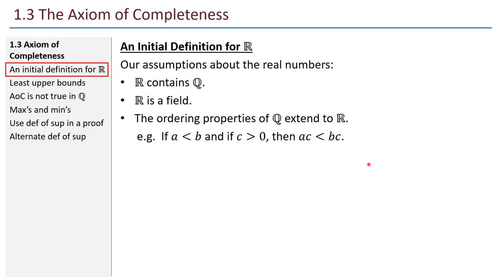An initial definition for the real numbers. What are the real numbers? Here are our assumptions. First of all, the real numbers contains the rationals. Also, the real numbers is a field — that means I can add, subtract, multiply, and divide real numbers. I can't divide by zero, but otherwise the set of real numbers is closed under these operations. If I take two real numbers and do any of these operations, the result is another real number.